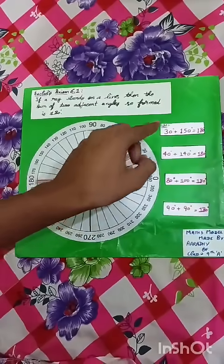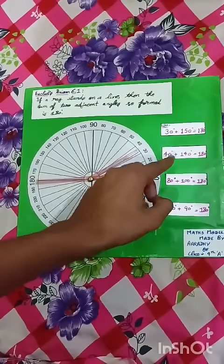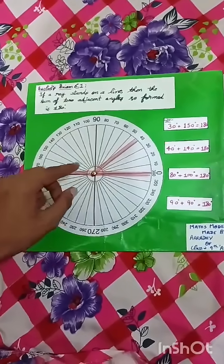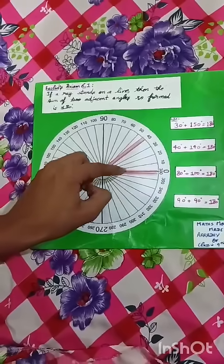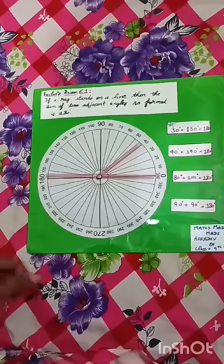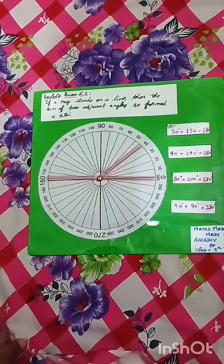Here are many more examples. If I put the smaller straw on 40 degrees, this angle becomes 40 degrees and this angle becomes 140 degrees, and the sum of these two angles is 180 degrees.